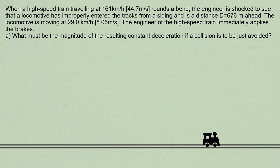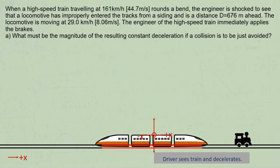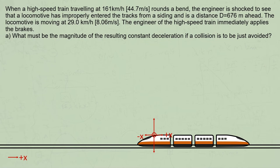Let's first set up our model. We need to choose which direction to make positive, and of course we'll choose the direction the trains are both traveling in. I'm going to set time t equals zero to be when the engineer of the train first applies the brakes, and the origin to be the location on the tracks of the front of the train at that time, but we could just as easily choose an origin based on the locomotive instead.